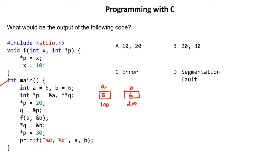We have a pointer variable P. A pointer holds an address. P is a pointer variable which holds the address of A. We make a box for P as well since it is also a variable with its own memory. Let address of P be 300. Inside P we put the address of A, which is 100.